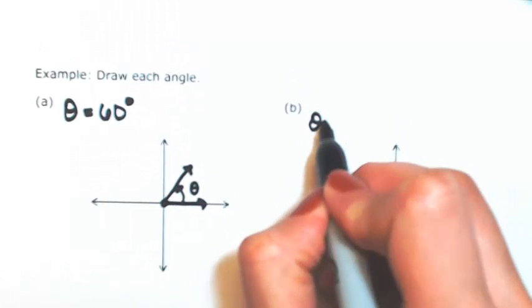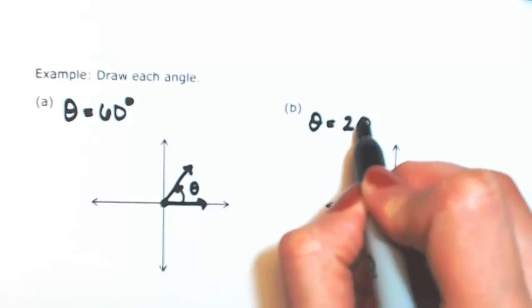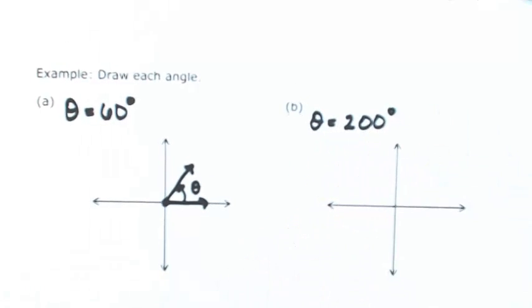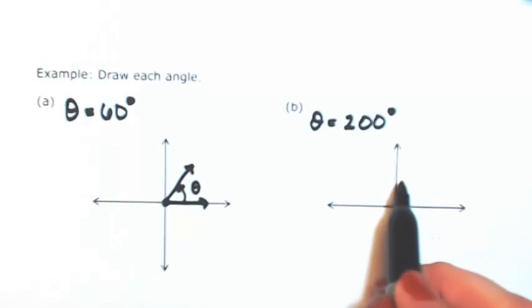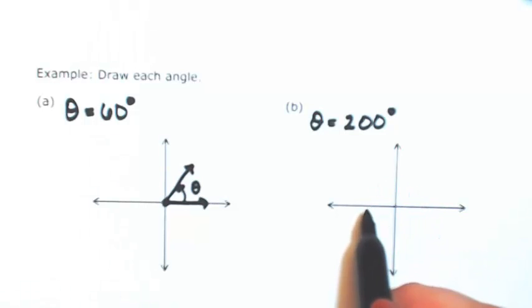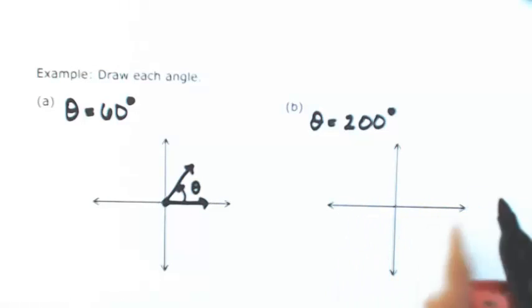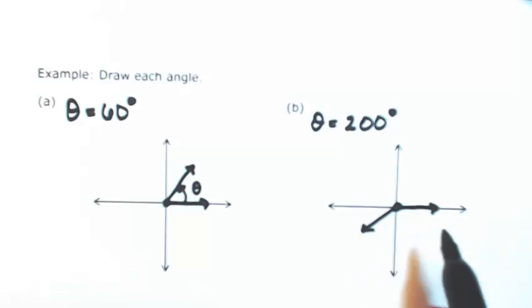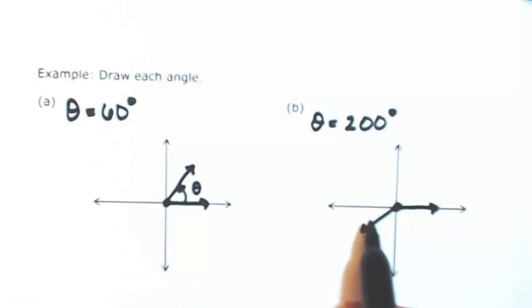Let's say maybe that theta is 200 degrees. A quarter of the way is 90, then 180, so it's got to be a little bit past 180. So again, still starting from standard position. So 20 degrees past 180.